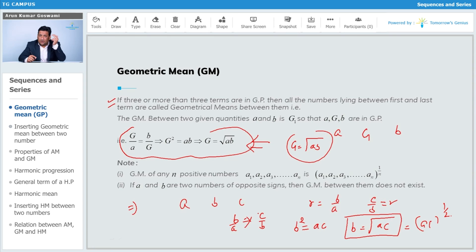For four numbers, power will be 1/4; for five, 1/5. Similarly, if I have n numbers—if I say a₁, a₂, a₃ till aₙ are the n numbers—the geometric mean for n positive numbers will be (a₁ × a₂ × a₃ × ... × aₙ)^(1/n).